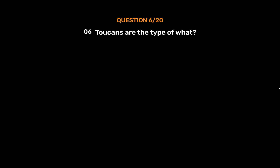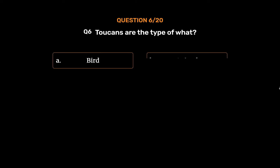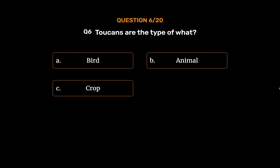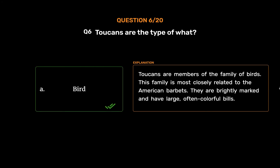Question number 6. Toucans are the type of what? Option A: Bird. Option B: Animal. Option C: Crop. Option D: Insect. The correct answer is Option A, Bird. Toucans are members of the family of birds, most closely related to the American barbets. They are brightly marked and have large, often colorful bills.